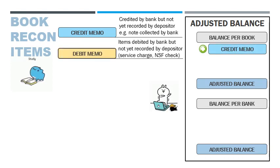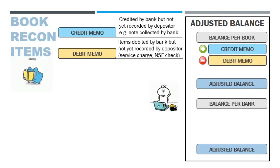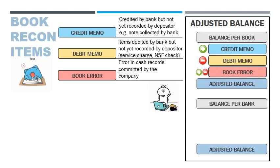Next are debit memos, which are items debited by the bank but not yet credited by the company as cash disbursements — these are deducted in our bank reconciliation. Last are book errors, which are added or deducted depending on the nature of the error.